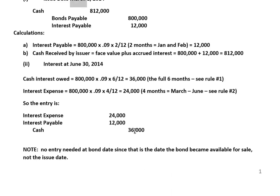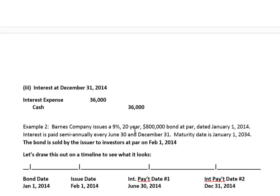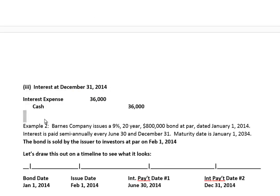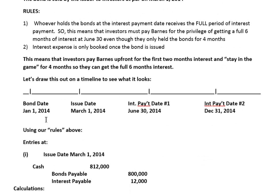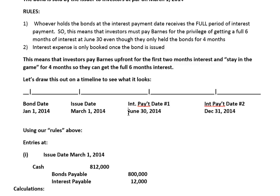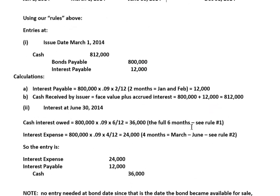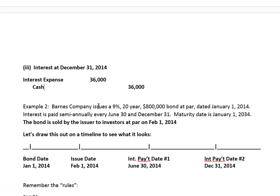We've recorded our first interest payment. We now have to make an interest payment on December 31st. From July 1st all the way to December 31st, that's a full six months — a straight six-month period with no issues. We don't have to allocate any two months like we did before. We're only calculating straight interest to pay out to the investor for six months, and Barnes has to book interest expense on that. So all we do is debit interest expense and credit cash.